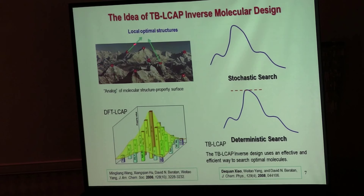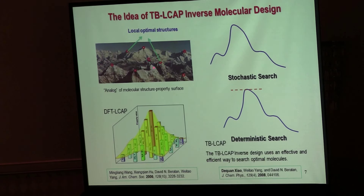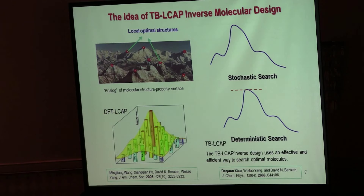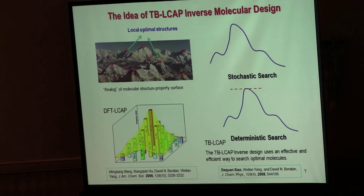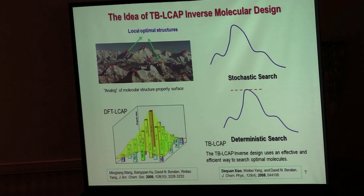The molecular design problem itself is not a tractable problem. People estimate that if you try to explore all possible chemical structures with molecular weight less than 500, you will end up with 10 to the 200 possible chemical compounds — a gigantic molecular space. In one sense, it's bad news because it's hard to find something useful. But in another sense, it's good news because future generations will always have jobs to do as chemists.